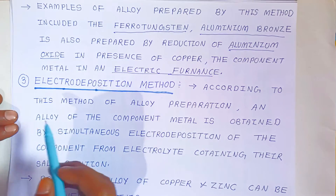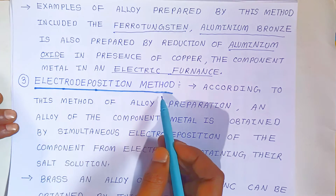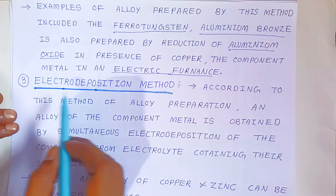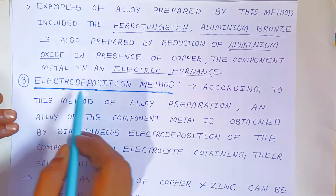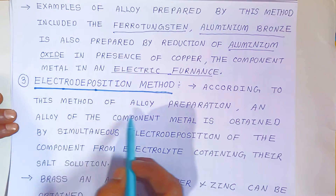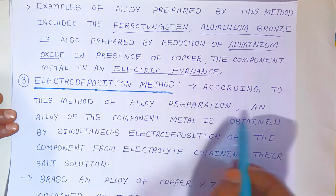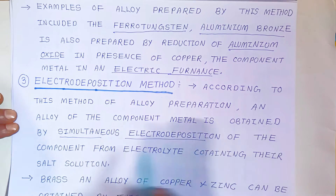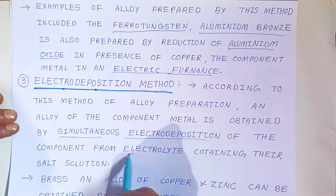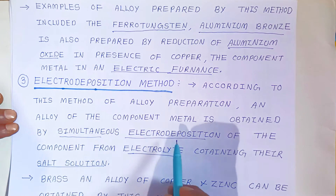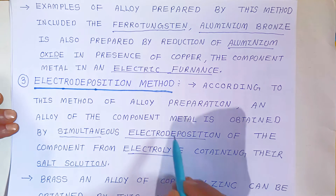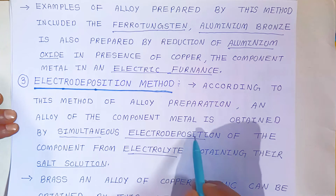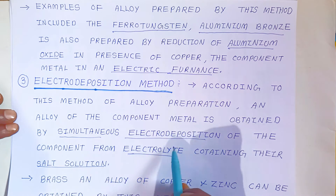The third method to prepare an alloy is the electro deposition method. In this method, electricity is passed through a salt solution, causing deposition. An alloy of component metals is obtained by simultaneous electro deposition of the components from an electrolyte containing their salt solution. Both metals are deposited together at once.